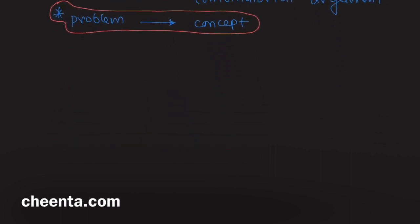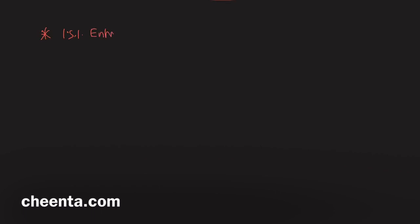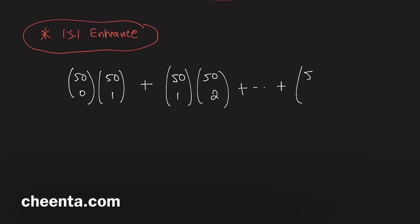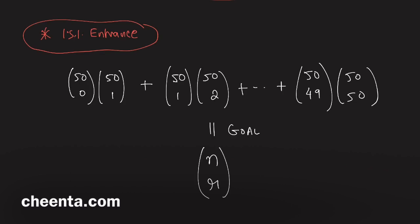The problem here is from the ISI entrance exam and other Olympiads as well. It's a very simple problem if you know Vandermonde's identity. It says: find a compressed form of 50 choose 0 times 50 choose 1, plus 50 choose 1 times 50 choose 2, up to 50 choose 49 times 50 choose 50. The goal is to write this in n choose r form.